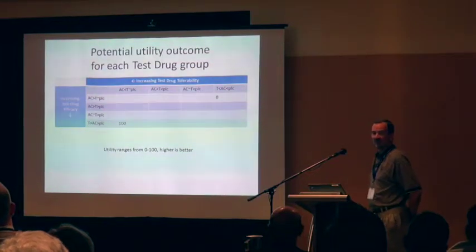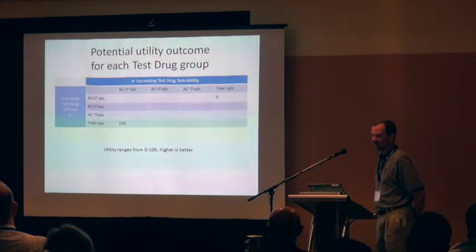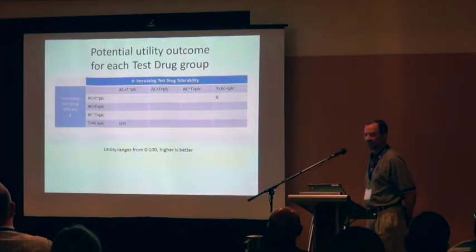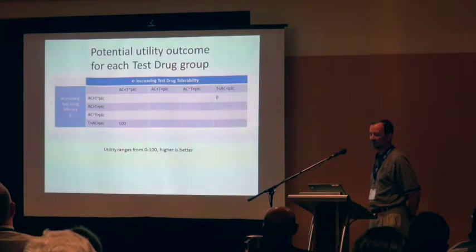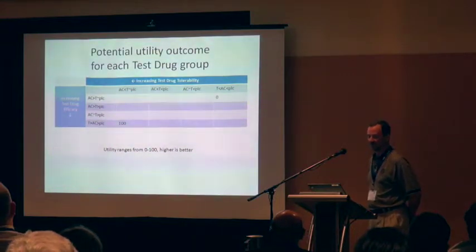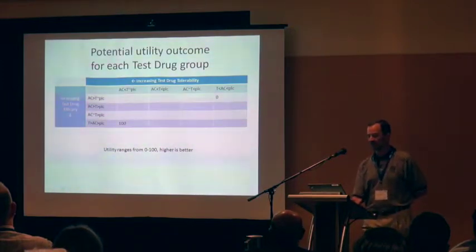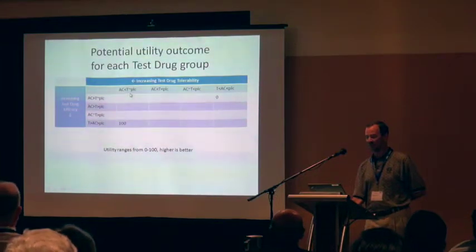Rather than define a clinical utility function as a linear combination of efficacy and safety endpoints in closed form, the clinician wanted to define utility to combine regions of clinical efficacy. We put tolerability across the columns and efficacy across the rows and defined ranges where, in the leftmost column, the active treatment had worse tolerability than the test treatment, which was similar to placebo.